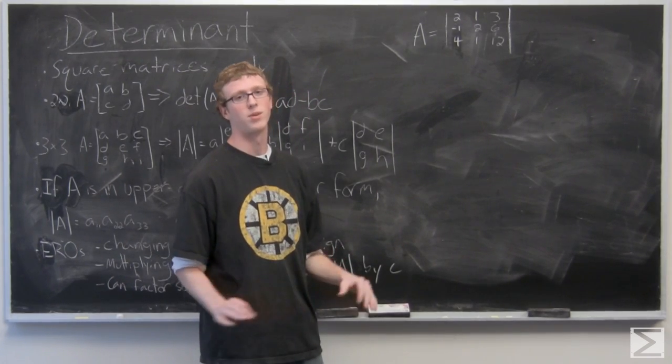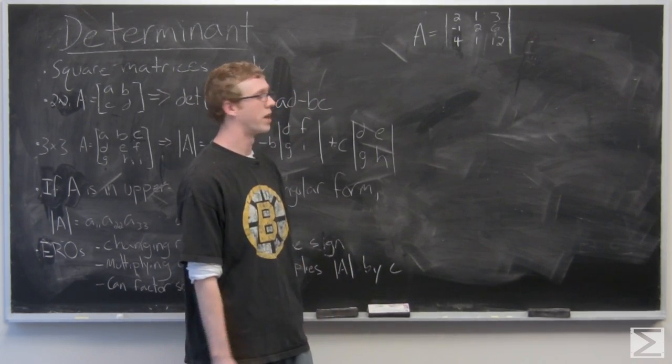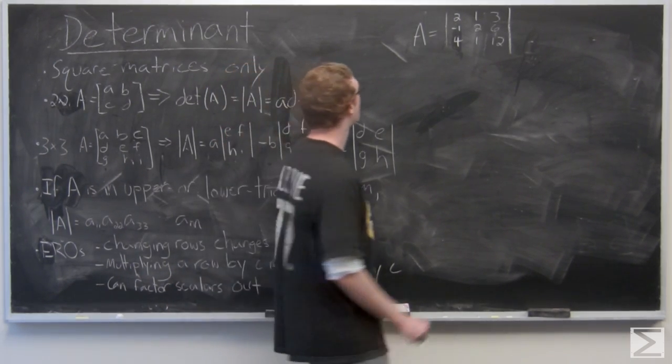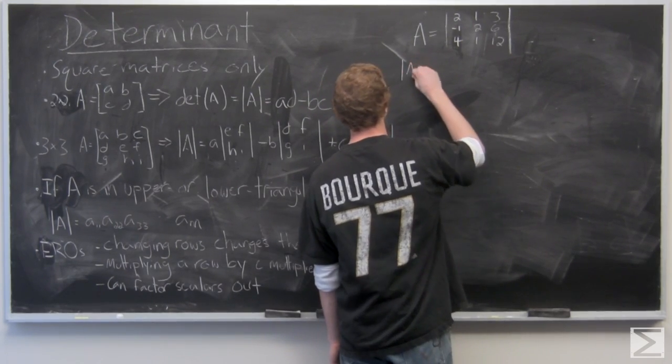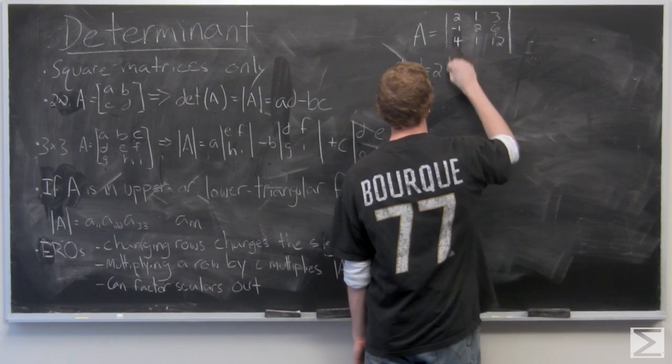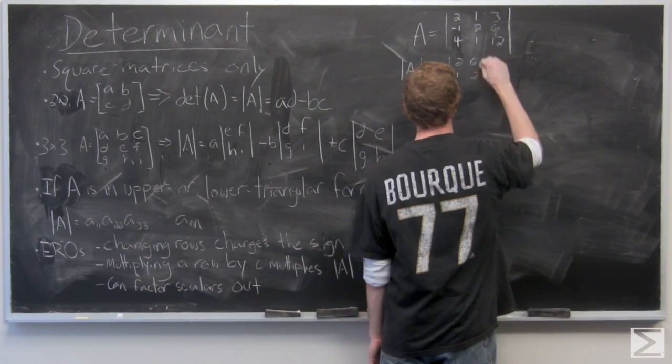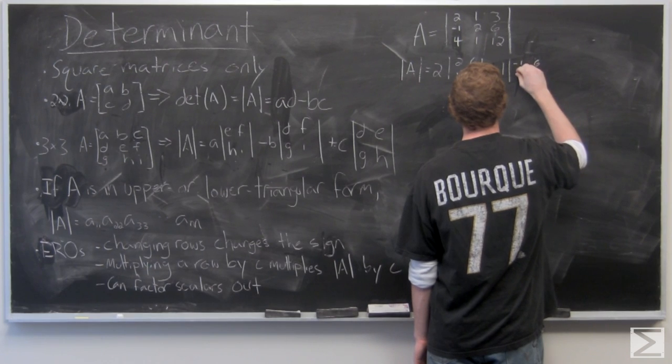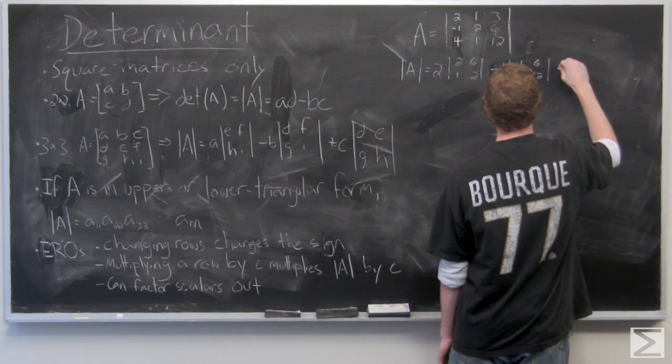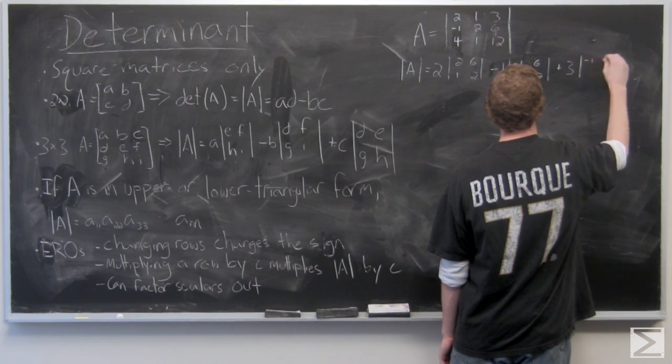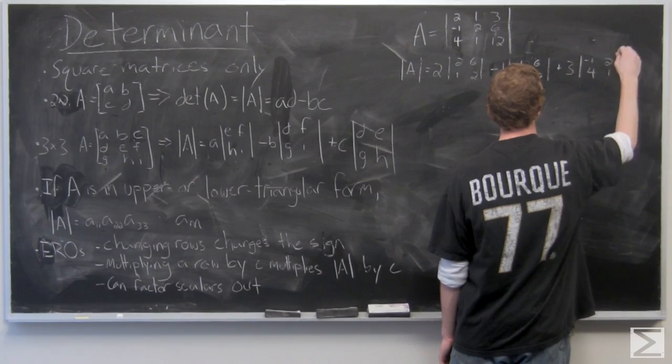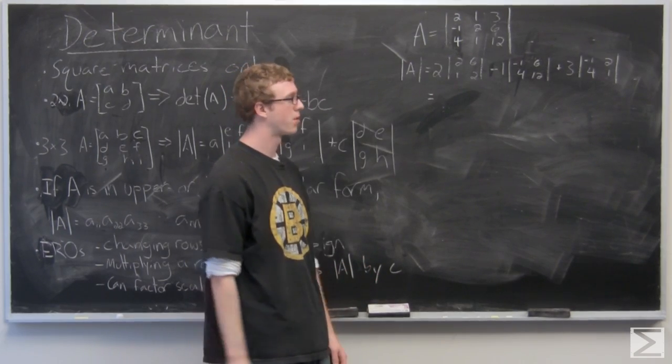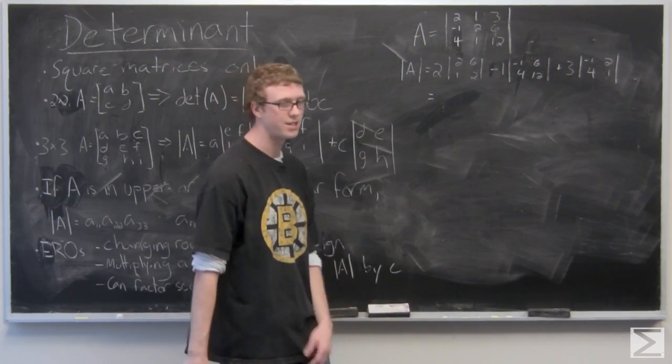We're going to start off by just taking the determinant in the normal style and then I'll put the matrix into upper triangular form and find out what happens when we use elementary row operations. So just multiplying it up as normal. So we've broken it down into components that are two by two matrices, which are very easy to take the determinant of.